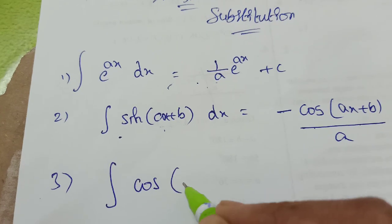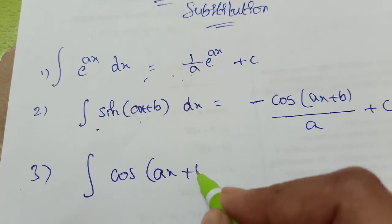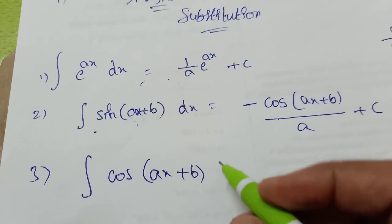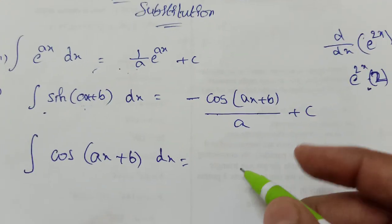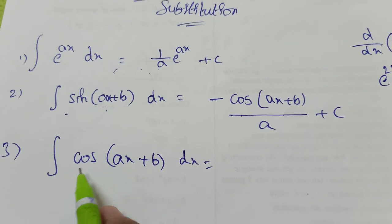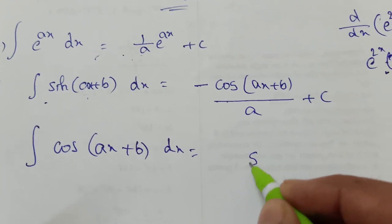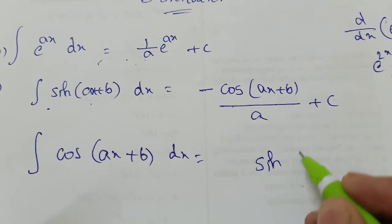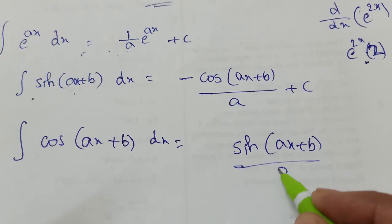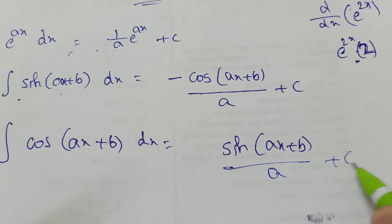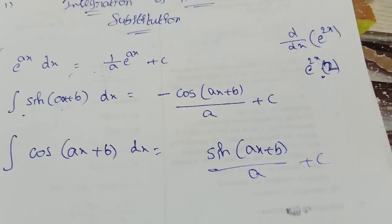Similarly, the integration of cos x is sin x, so the integration of cos(ax+b) dx equals (1/a)sin(ax+b) + C, dividing by the coefficient a.